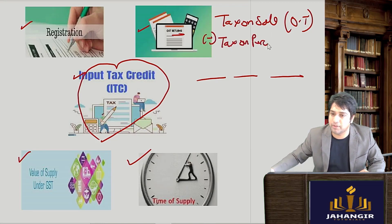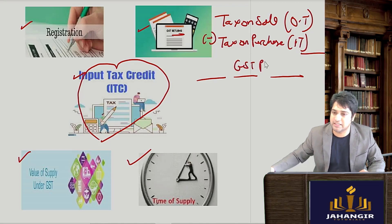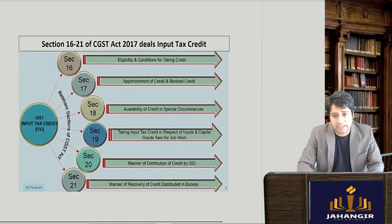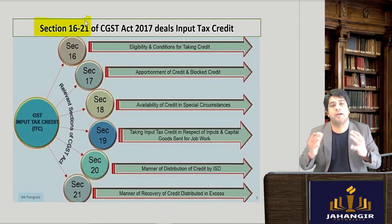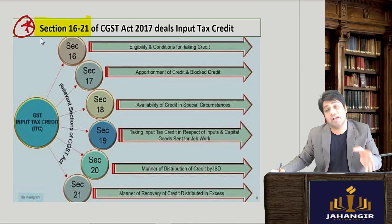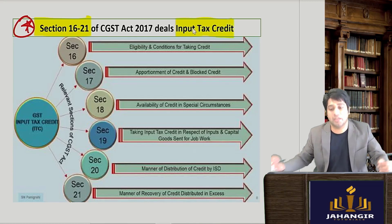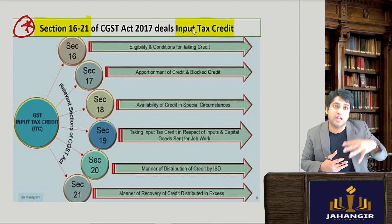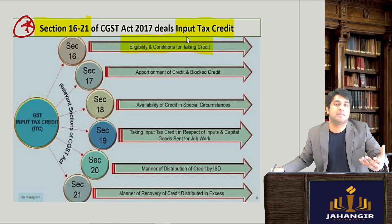Output tax minus input tax equals GST payable. In the entire GST law, ITC is covered from Section 16 to Section 21. This is the most important part because there are certain conditions on when you can take a credit of your input tax. If a dealer is not allowed to take a credit of his purchases, he will be in trouble. There are conditions under Section 16 to 21 which we will be starting next.